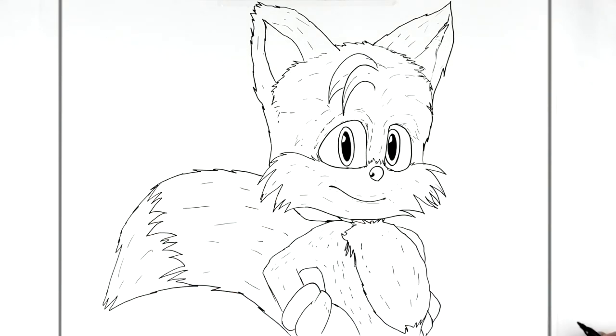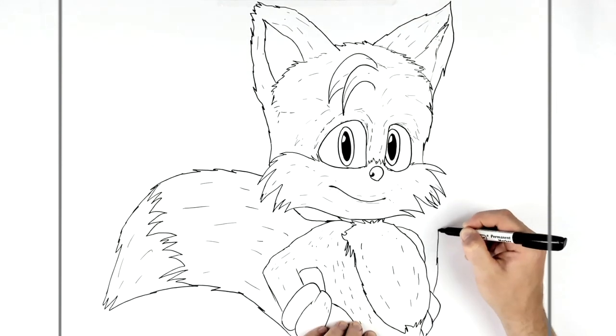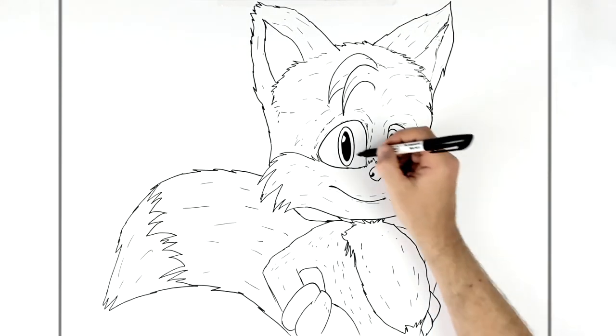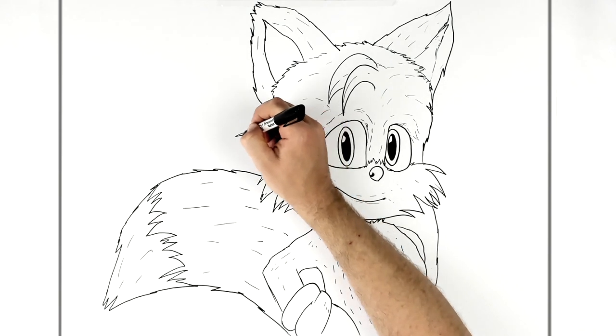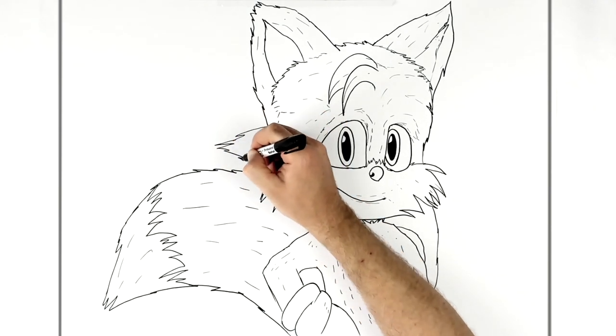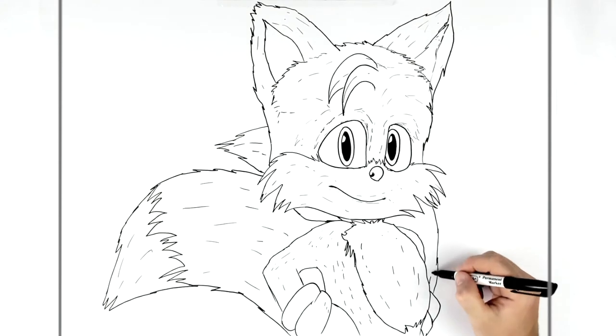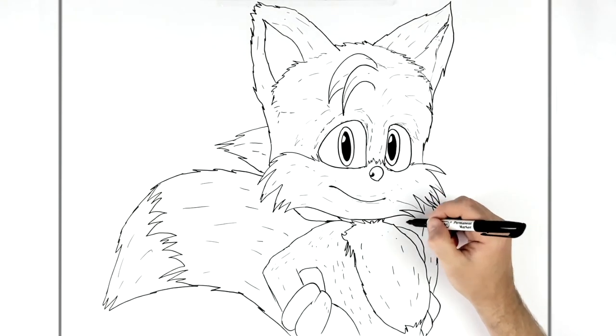And then the other tail grows out from behind his back here, so it'll like go out and around this way, and then come out the back of his head, like so. You can add texture to that as well, right.